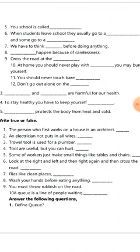Eighth blank: one dash happened because of carelessness. Ninth: cross the road at the dash — we have to cross at a designated place, like a zebra crossing. Tenth: at your home you should never play with dash — you may burn yourself.